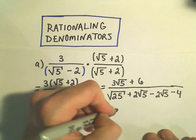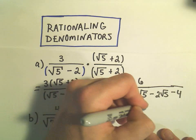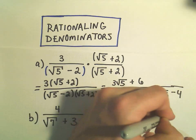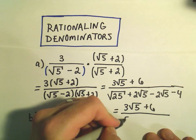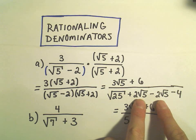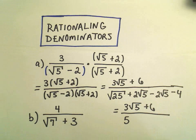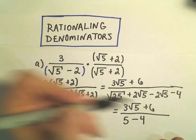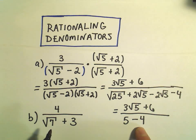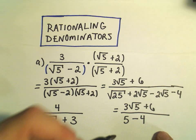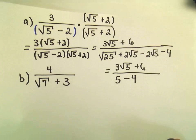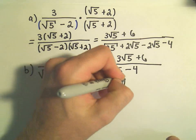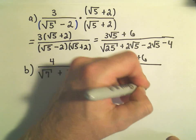And notice there's not a lot to do in the numerator, 3 root 5 plus 6, but this is the whole point of multiplying by the conjugate. I mean, the square root of 25 is just 5, so that's no problem. Notice the terms in the middle are going to cancel out. We have a positive 2 root 5 and a negative 2 root 5, so they're gone. Minus 4, 5 minus 4 simply equals 1. Anything divided by 1 is just itself. So this first problem will simply reduce to 3 times the square root of 5 plus 6.